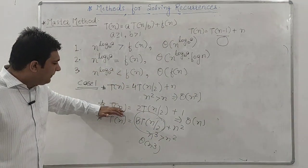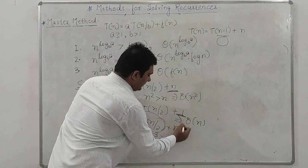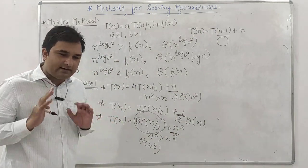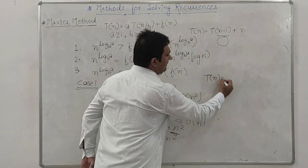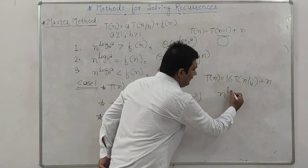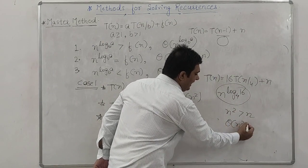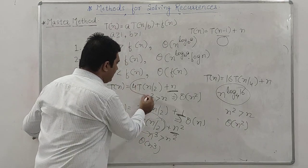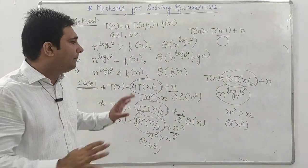In all these Case 1 examples, n^(log_b(a)) is greater than f(n). Another example: T(n) = 16T(n/4) + n. Here n^(log_4(16)) = n^2, which is greater than n, so Theta(n^2). The pattern is clear: whenever n^(log_b(a)) is greater than f(n), the complexity is Theta(n^(log_b(a))).